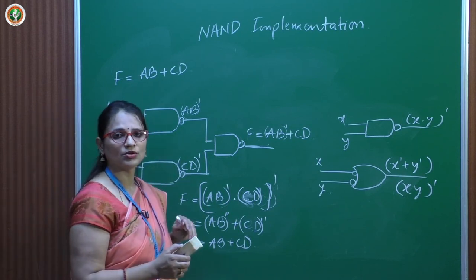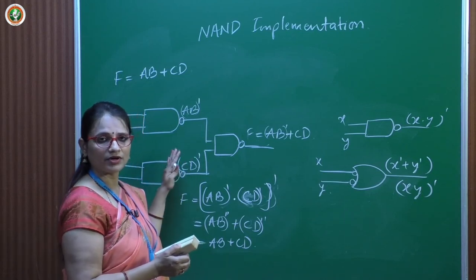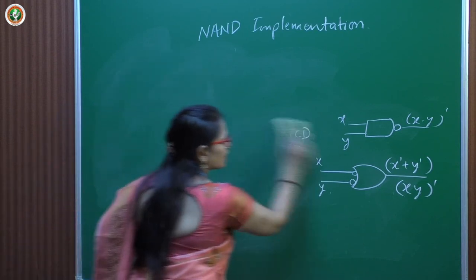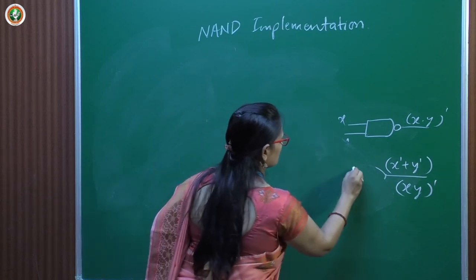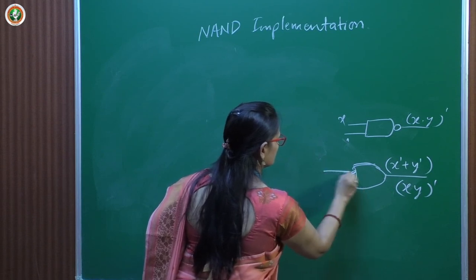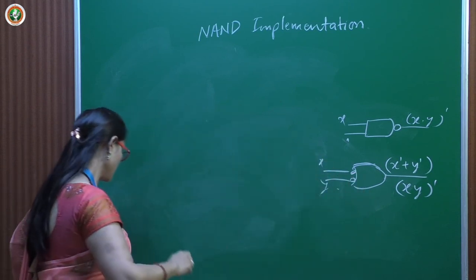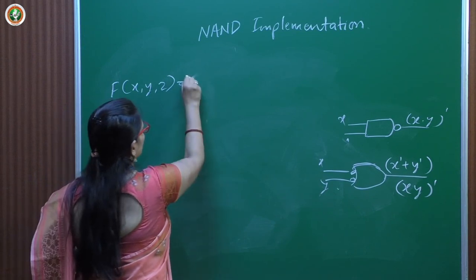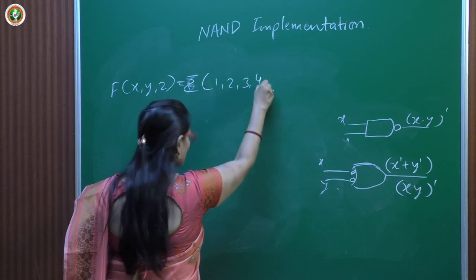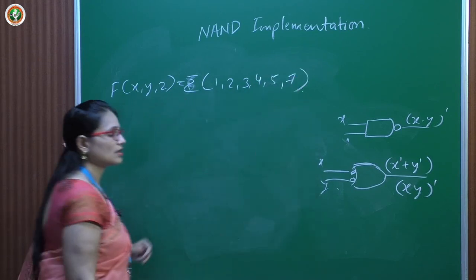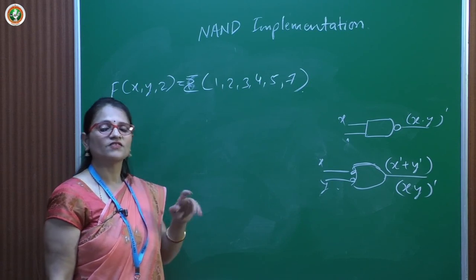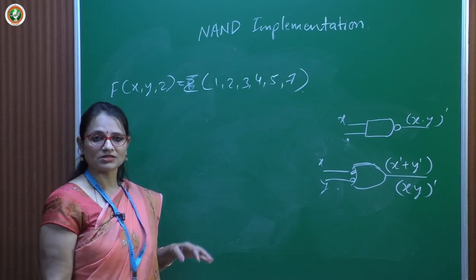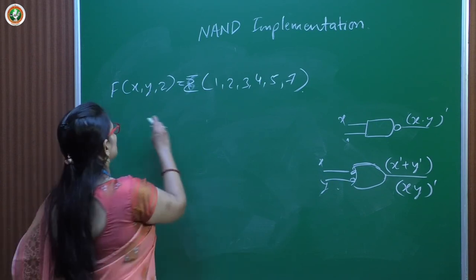Let us quickly look at another example. We have f(x, y, z) = Σm(1, 2, 3, 4, 5, 7). This is expressed in canonical form. The first step is to construct a K-map, simplify it, construct the AND-OR circuit, and then convert to NAND-NAND.